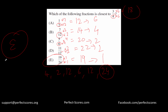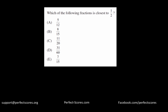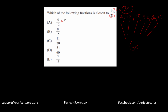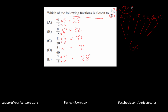The final question asks which fraction is closest to 1 by 2. With denominators of 2, 12, 15, 20, 60, and 15, the LCM is 60. Converting 1 by 2 gives 30 by 60. The other fractions convert to numerators 25, 32, 33, 28, and 31 over 60. The distances from 30 are 5, 2, 3, 2, 1, and 2 — so the fraction with numerator 31 is closest, making the answer option D.